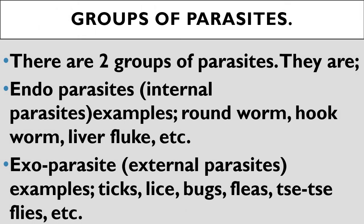Groups of parasites: This is one of our learning objectives. Parasites are divided into two groups. The first is endoparasites — say it after me: endoparasites. Endoparasites are internal parasites, those ones we cannot see; we only feel their presence in our body. Examples are roundworm, hookworm, liver fluke, and others.